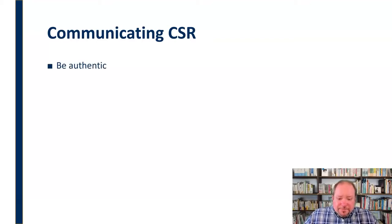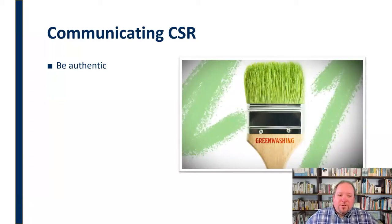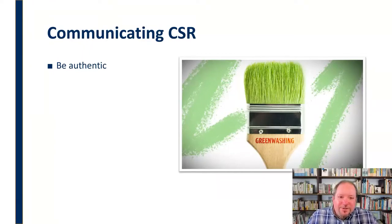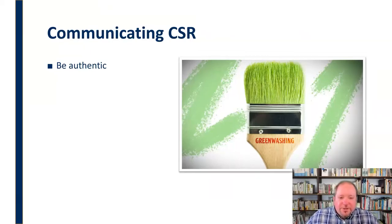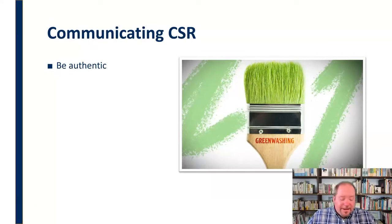When communicating CSR, there are a few things to keep in mind. First, we need to be authentic. We want to avoid what's called greenwashing — just slapping a green layer of paint on something. This comes from the environmental area where an organization does something just so they can say they've reduced their carbon footprint, without really having any impact on the overall environment. If there's no real meat behind it, we don't want that. We want to be authentic in what we're doing and the impact it's having.